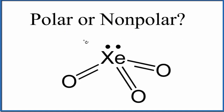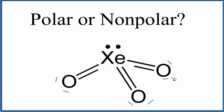So first off, we have the structure here, and you'll notice something kind of strange. Xenon has 2, 4, 6, 8, 10, 12, 14 electrons around it. But that's okay — xenon can have an expanded octet. Each oxygen atom would have 2, 4, then we'd have lone pairs out here around each oxygen atom. So each oxygen atom does have to have an octet. So this is the Lewis structure for xenon trioxide.